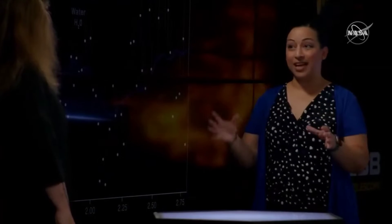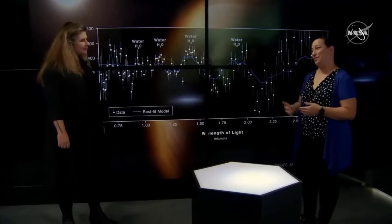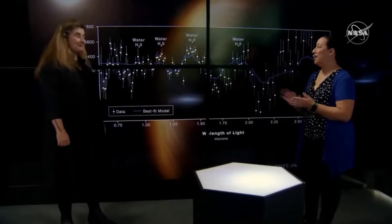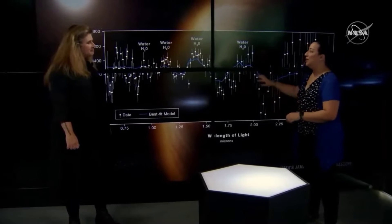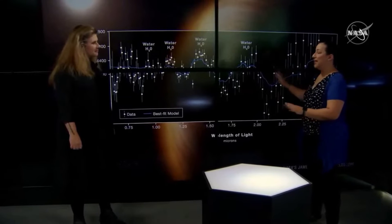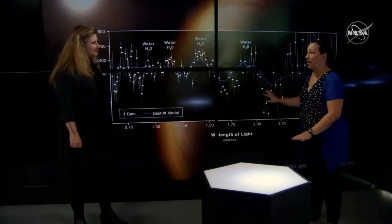This exoplanet is about the size of Jupiter, about half the mass of Jupiter. It orbits around a sun-like star but does it every three and a half days, so it's extremely hot and extremely close in—nothing like our solar system planets. But that's okay because what we're seeing is the first exoplanet data from Webb.